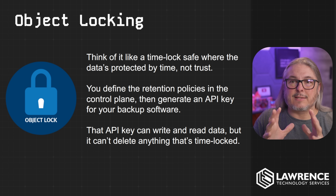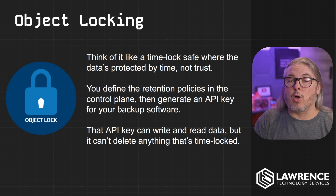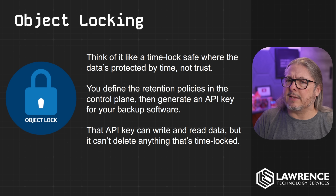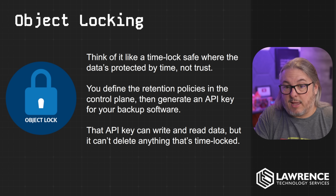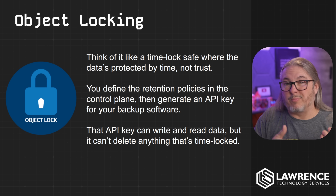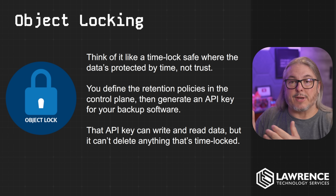Object locking — think of it as a time-lock safe where the data is protected by time, not trust. You define the retention policies in the control plane — the web interface you log into, usually for some type of cloud storage or bucket service — then generate an API key for your backup software to use. That API key can write and read data, but cannot delete anything that's time-locked. For example, you would set a policy of: I don't want anything to be deleted for 30 days. Within that 30 days, the API key can read the data and may request deletion, but it will not be able to because the API key is only permitted to delete data older than 30 days.